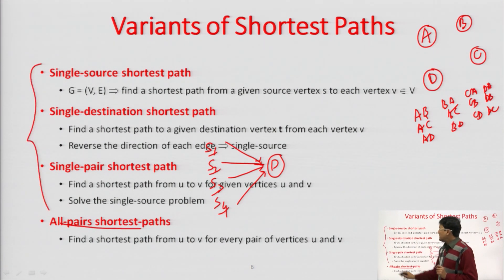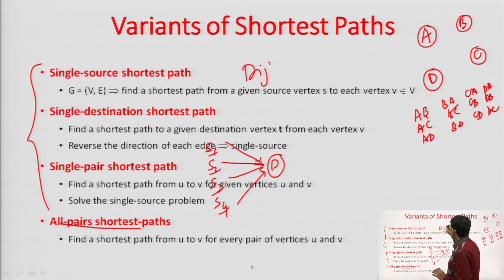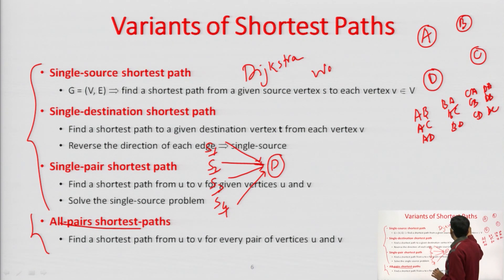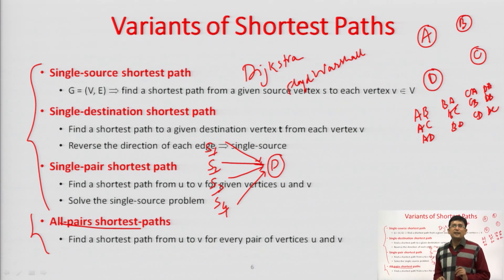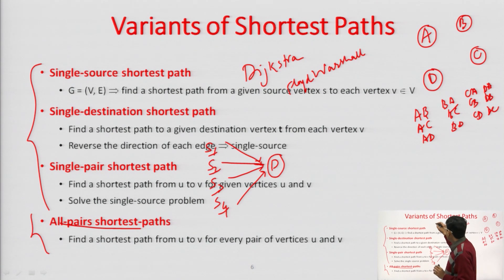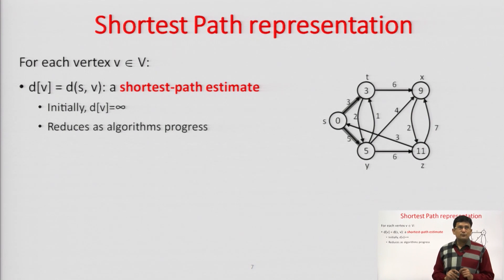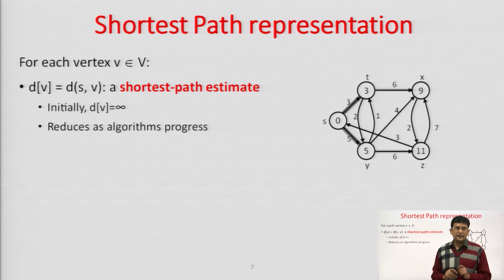For finding out the single source shortest path where there are no negative weight edges, you apply Dijkstra's algorithm. For finding out the all pair shortest path, you apply the Floyd-Warshall algorithm. In case negative weight cycles exist in the graph, those problems can be solved by the Bellman-Ford algorithm. Today, we will discuss only Dijkstra's algorithm for finding the solution to the single source shortest path.